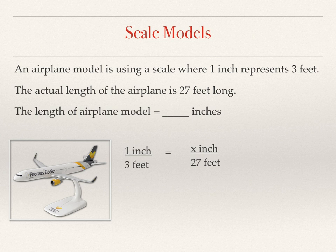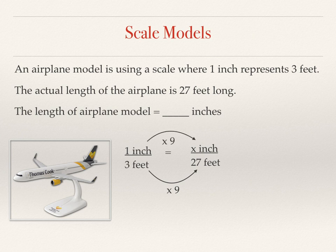We're going to multiply or divide to solve proportions, so we look for multiplication or division relationships. Between the denominators, 3 times 9 is 27. Applying that same relationship to the numerators: 1 times 9 is 9. So the length of the airplane model is 9 inches.